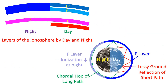During daytime, the F layer of the ionosphere splits into F1 and F2 layers and fuses back at night due to decreased ionization. Due to the decrease in ionization at night, the F layer may not be able to reflect radio signals back to earth.